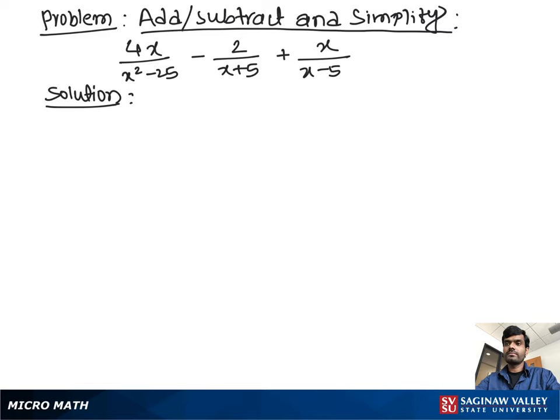Add, subtract and simplify: 4x over x squared minus 25, minus 2 over x plus 5, plus x over x minus 5. Let's try the problem one more time. 4x over x squared minus 25, minus 2 over x plus 5, plus x over x minus 5.